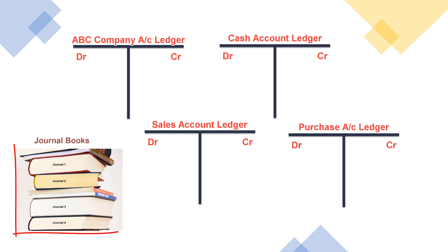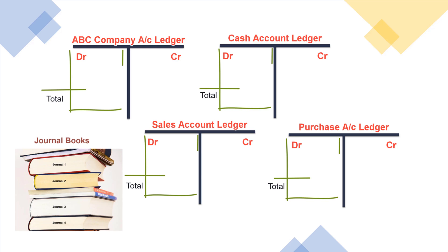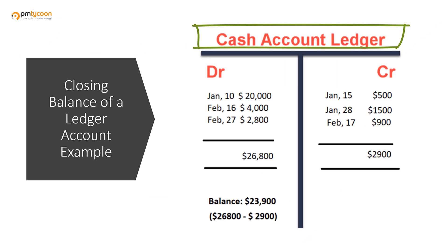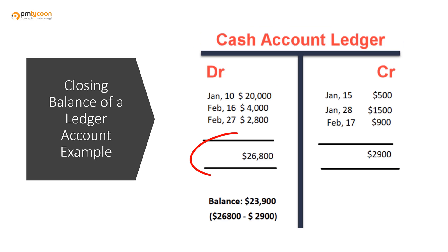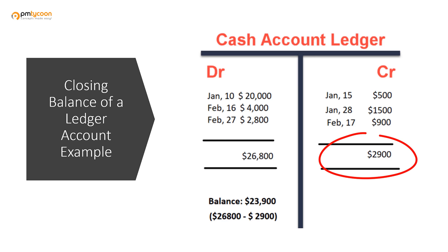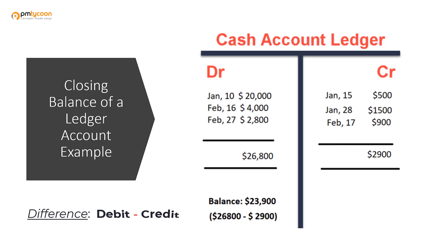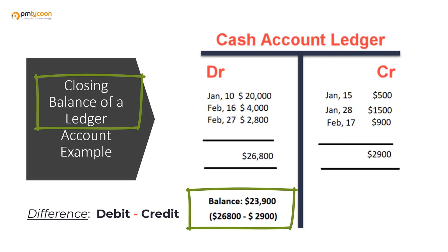Once we write the debit entries and credit entries for all the accounts, we sum the totals of debits and the totals of credits for each account type. For the cash account ledger we sum up all the debits and get a total debit value, and similarly we sum all the credit values and get a total credit value. Sometimes you may have a higher value for debit, sometimes a higher value for credit, depending upon the nature of transactions. Then we take the difference between the credits and the debits.